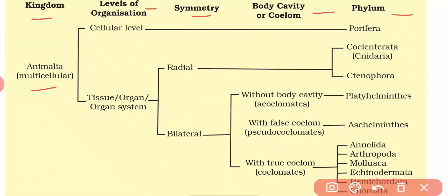For levels of organization, we have two levels: first, the cellular level, and second, the tissue-organ or organ-system organization. At the cellular level, we have only one phylum — Porifera. They do not have any type of coelomic cavity, meaning they are acoelomate, and they do not have any type of symmetry, meaning they are asymmetric.